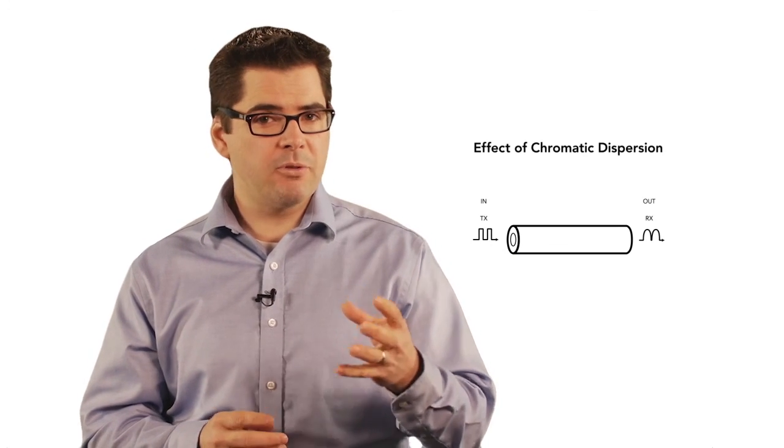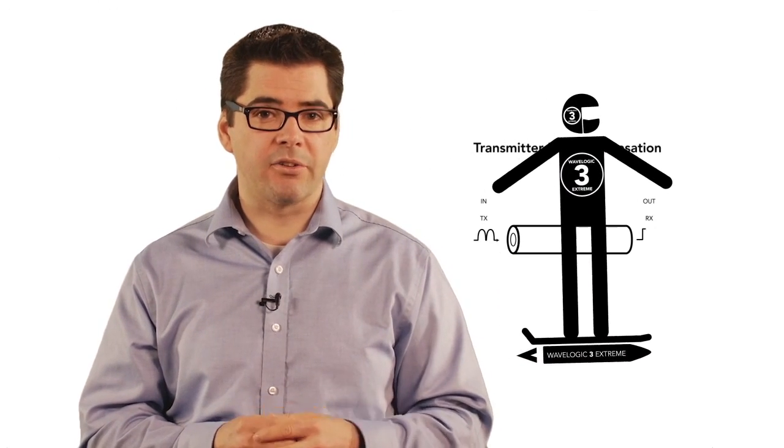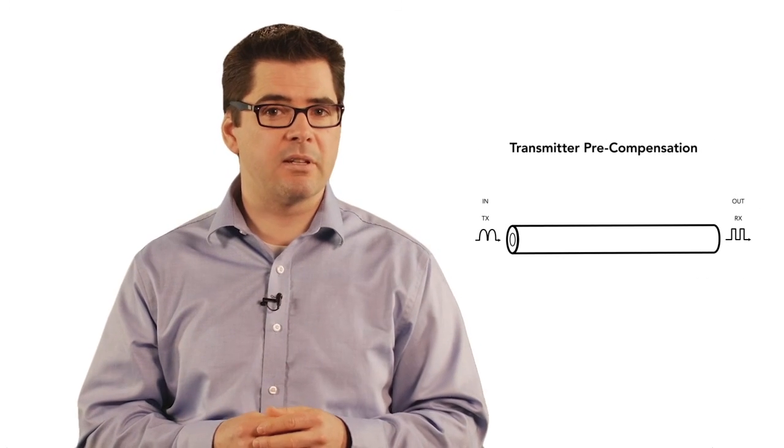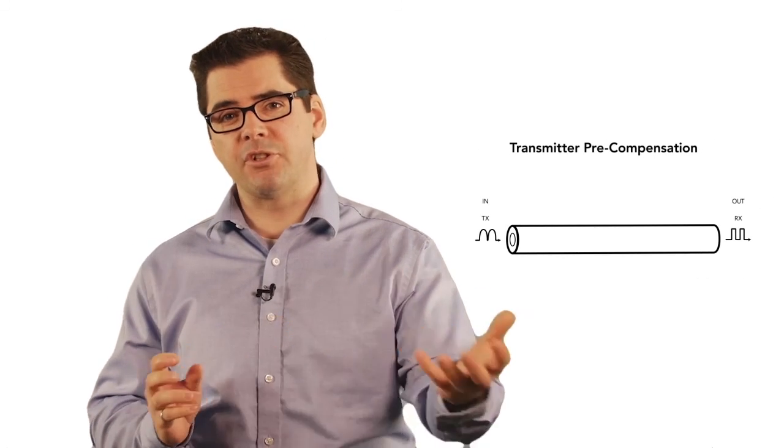That transmitter DSP allows us to compensate for huge amounts of chromatic dispersion in your wet plant. So for brand new cables that are typically optimized for coherent signals and therefore are not dispersion compensated in the cable itself, this lets you go much much further.